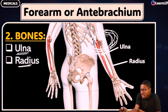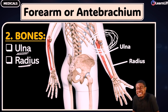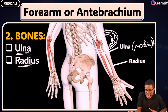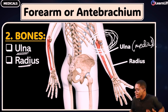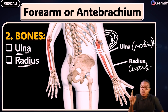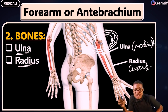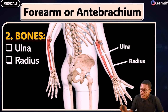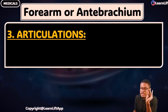When you stand anatomically, the ulna is medial — meaning it is closer to the body. The radius is lateral. That's the key difference between the two: ulna is medial, radius is lateral.